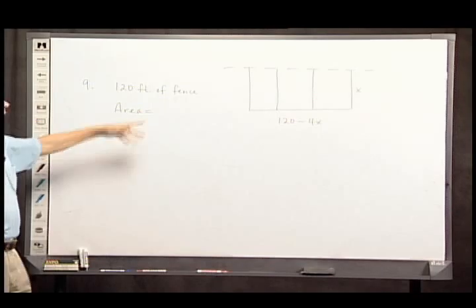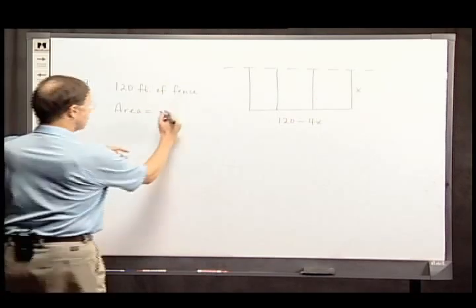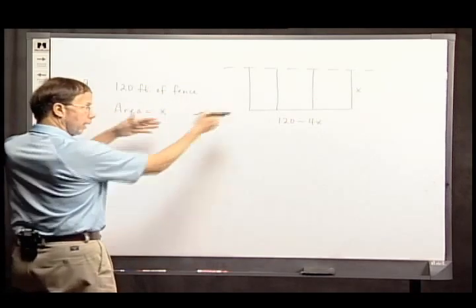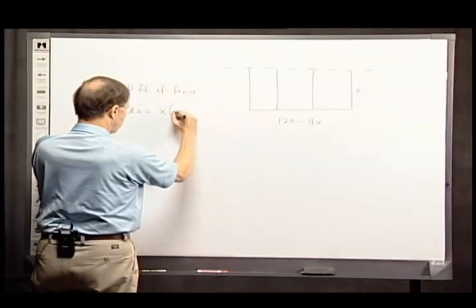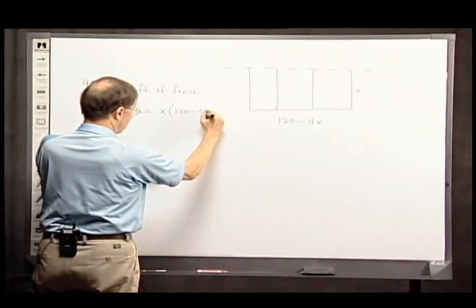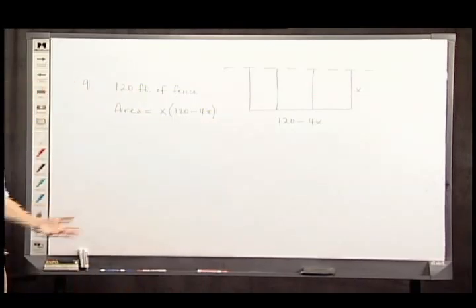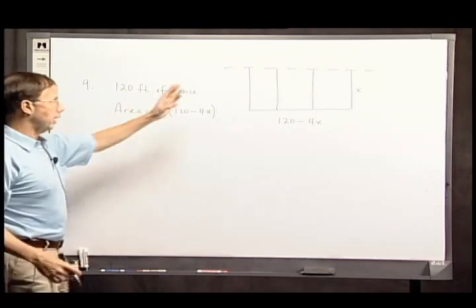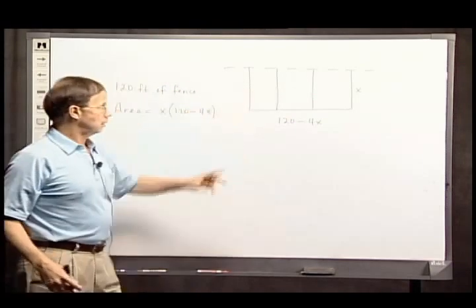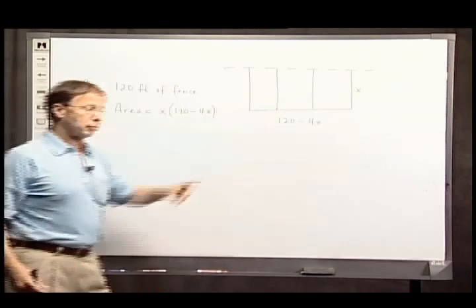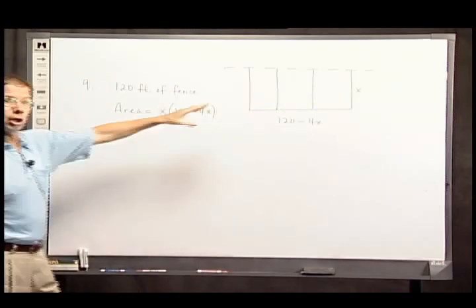What's the area now? Well, it's length times width. It's x, the width, times the length. And as straightforward as that, I have represented the area of this rectangle as a function of this particular dimension.